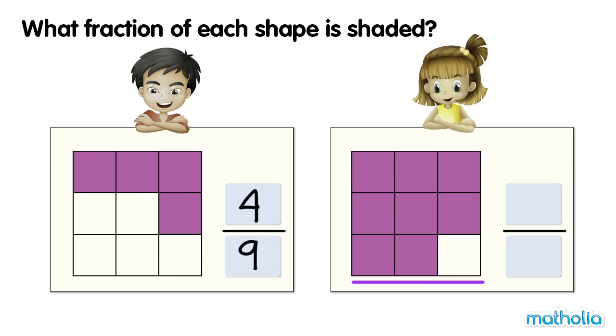This square is also divided into nine equal parts. Eight of the parts are shaded. Eight ninths of the square are shaded.